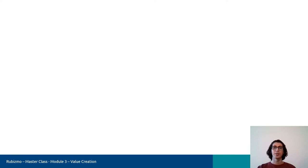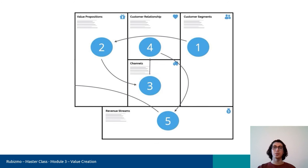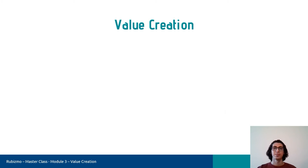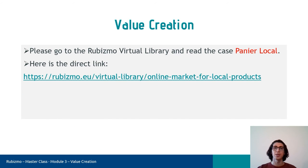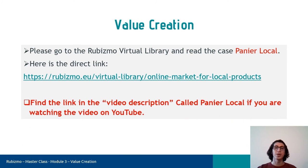Now it's time to go into more detail to describe the right-hand side of the business model canvas and I will explain this order step by step. Before I start, please go to the Robismo Virtual Library and read through the case Panyol Local. You can find the link in the video description if you are watching on YouTube. In the next slide, you will also be shown a short video of the company.